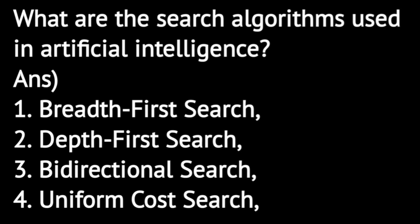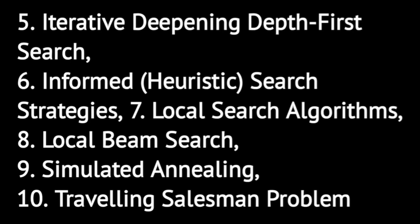What are the search algorithms used in artificial intelligence? These include breadth-first search, depth-first search, bi-directional search, uniform cost search, iterative deepening depth-first search, informed heuristic search strategies, local search algorithms, local beam search, simulated annealing, and the traveling salesman problem.